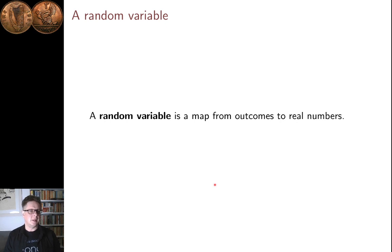Random variables, the idea of a random variable at first seems trivial. It's a map, just a map, from outcomes to real numbers. So the outcomes are the elements of the sample space, the possible outcomes of the experiment that you're trying to model with your probability theory. And the random variable just maps each of those outcomes to a real number.